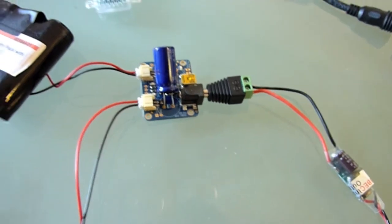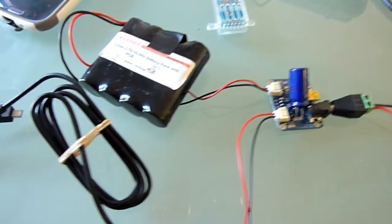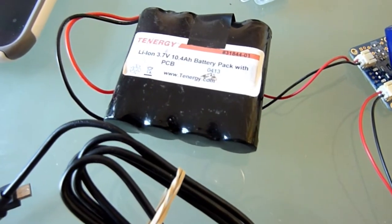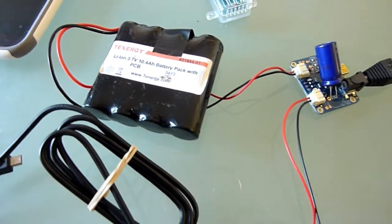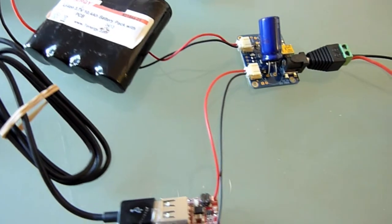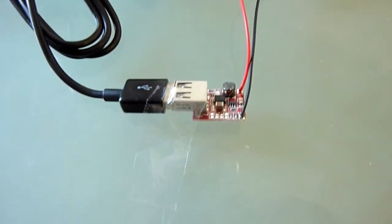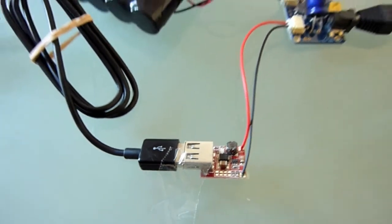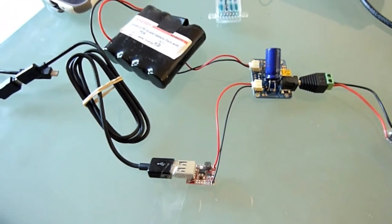And then 6 volts goes into the solar charge controller that was made especially for lithium ion batteries like the 3.7 volt battery attached here. On the other side, the solar charge controller sends power out to the step-up controller. Since the battery is 3.7 volts, this step-up brings it up to 5 volts for USB power.